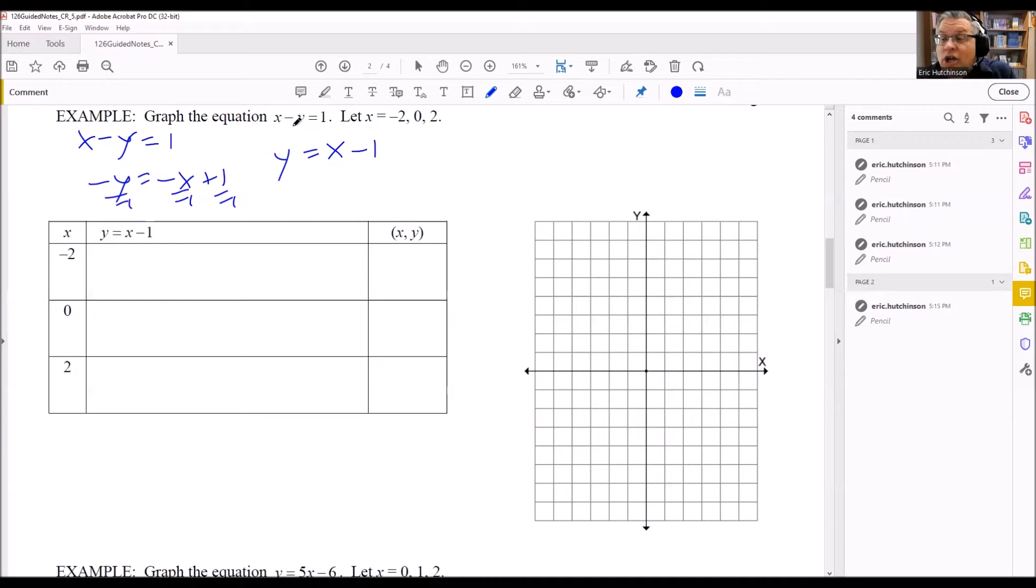So again, basically what I did is I just subtracted x, so I have minus x on one side and minus x on the other side. That's why it's negative here on the right-hand side. Notice I have this on my table already. I have y equals x minus 1.